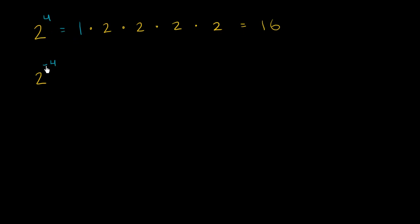Here, we're going to multiply negative 4 times. What does negative traditionally mean? Negative traditionally means the opposite. So here, this is how many times you're going to multiply. Maybe when we make it negative, this says how many times are we going to — starting with a 1 — divide by 2? So this could be viewed as 1 times, and we're going to divide by 2 four times.